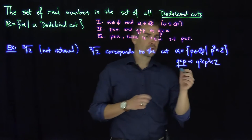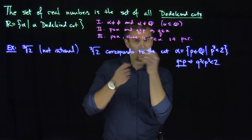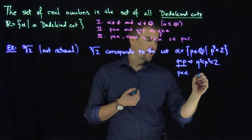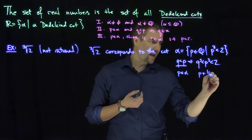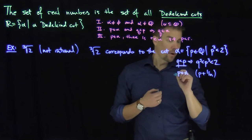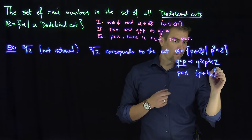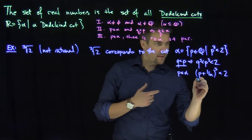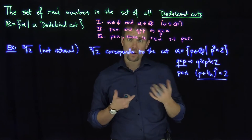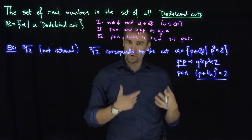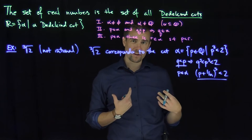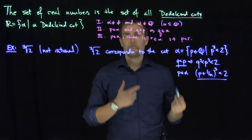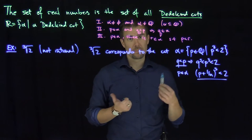Finally, we can show there's a larger rational number in the cut. If p is in alpha, we look at p plus one over n, and we can find values of n such that (p + 1/n)³ is still less than two. Since we can expand this out, there is a choice of n by the Archimedean principle. As n gets very large, 1/n is very small, and the expression will still remain less than two. We can formally prove this using the Archimedean principle.